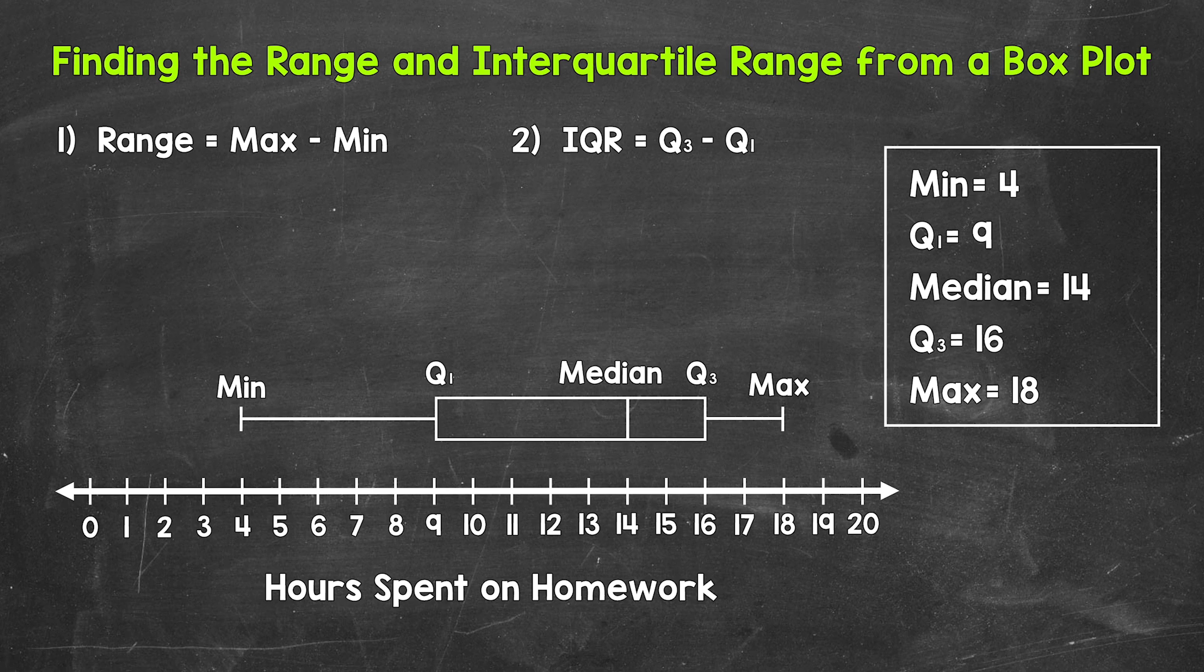Let's jump into our example and start with the range. Again, this shows us the spread of the data, the difference between the highest and lowest values. We need to take the maximum and subtract the minimum to find the range. The maximum is 18, so we have 18 minus the minimum, which is 4.